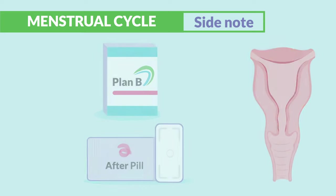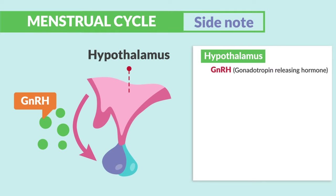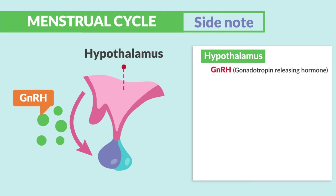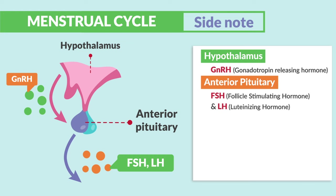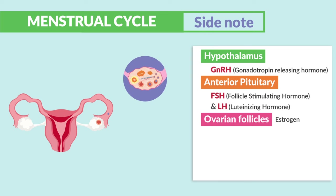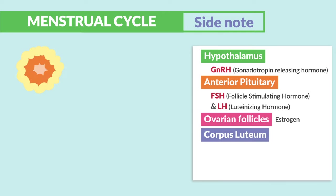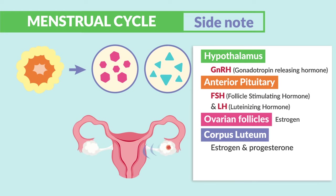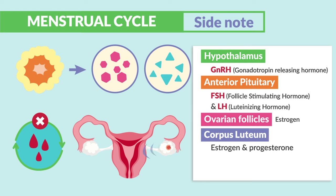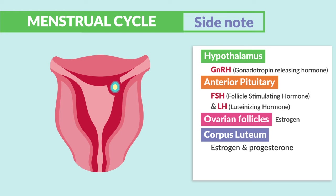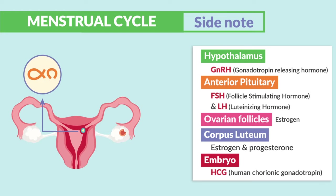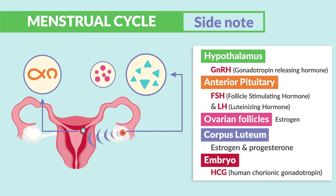As a quick recap: the hypothalamus releases GnRH, the gonadotropin-releasing hormone. The anterior pituitary releases FSH, the follicle-stimulating hormone, and LH, the luteinizing hormone. This party-popper of hormones stimulates the ovarian follicles to release estrogen, which helps in ovulation — the release of the egg from the follicle. The corpus luteum, that collapsed ovarian follicle after the egg was released, also releases estrogen and progesterone to keep the endometrial lining thick and prevent the cycle from restarting. If the egg is fertilized, it's called an embryo and it releases HCG, which tells the corpus luteum to keep pumping out high levels of estrogen and progesterone.